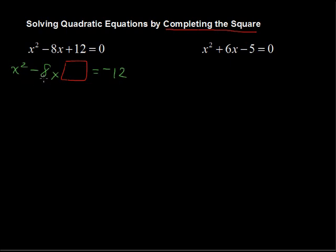We're going to take half of this middle coefficient, so negative 8 divided by 2, and then square it. And that's what we're putting in. So negative 8 divided by 2 is negative 4, and negative 4 quantity squared. Remember, negative times a negative is a positive, so I'm putting in positive 16.